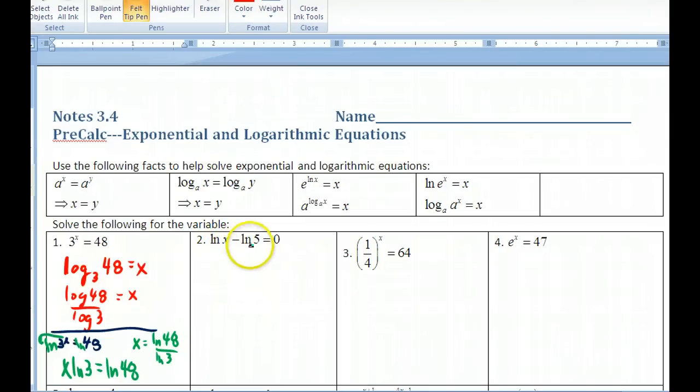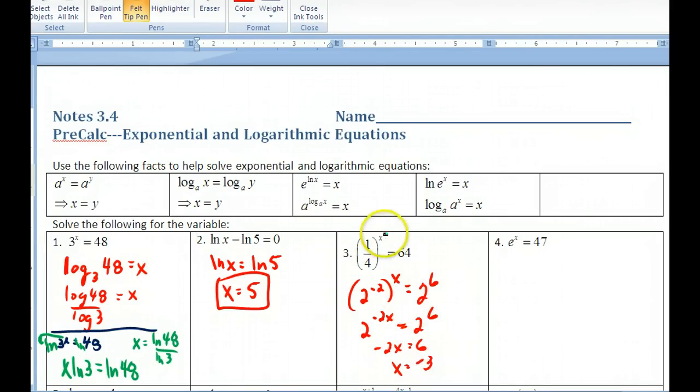This kind of looks like this rule right here. So I got ln x equals ln 5. So x equals 5, final answer. And if we have this one, the bases are the same. So if I take this, this would be 2 to the negative 2 to the x equals 64. Now 64 is 2 to the 6. So I'm trying to get both bases to be 2. This would be 2 to the negative 2x, power to a power, these numbers multiply, equals 2 to the 6. Negative 2x equals 6, so x equals negative 3.